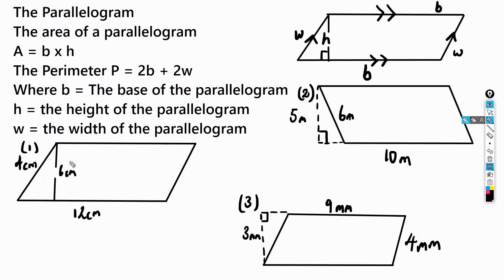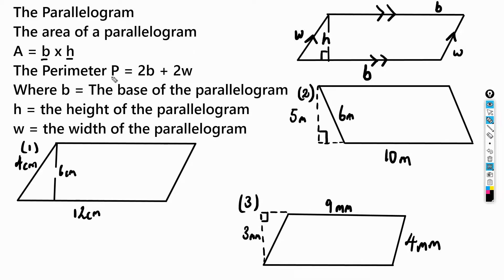Today we're going to be looking at the parallelogram. The area of a parallelogram is equal to the base multiplied by the height — similar to the rhombus. The perimeter p is equal to 2b plus 2w, where w is the width.